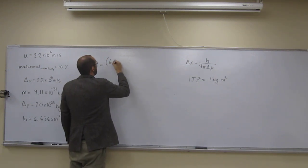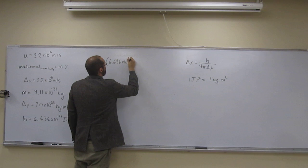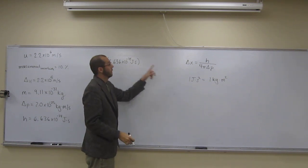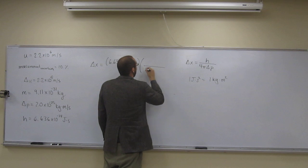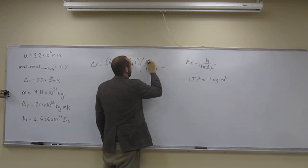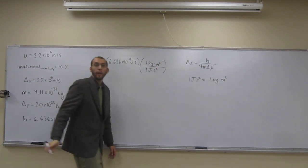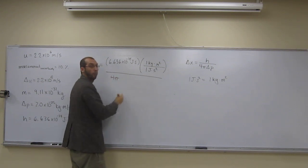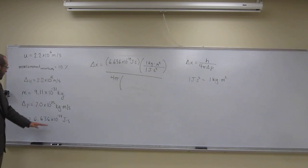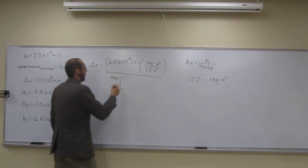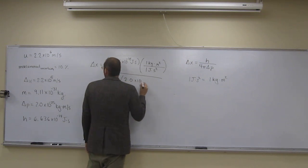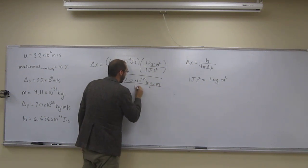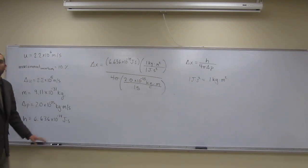So, well, let's just plug in. So, 6.636 times 10 to the negative 34th joules seconds, like that. So, we want to convert our joules, right? So let's use that conversion now. One joule second squared, one kilogram meter squared, like that. At the bottom, 4 pi, and then multiplied by our momentum. So, what do we have? 2.0 times 10 to the negative 25th kilogram meters per one second, like that. So, why did I do it this way? So I could cancel out all the units.